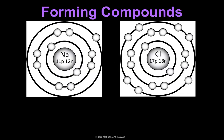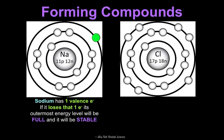Here is a Bohr model drawing of sodium and a Bohr model drawing of chlorine. Look at the outer energy level of sodium — it has one valence electron. So for it to be stable, it can either lose this one so that the next level becomes its outer energy level of eight, or it can gain seven. It's going to be easier to lose that one. So sodium, with its one valence electron, is going to lose that electron in order to have its outermost energy level be full and stable.